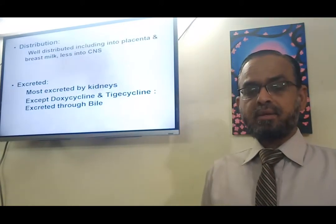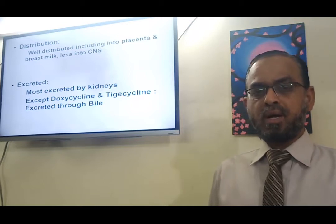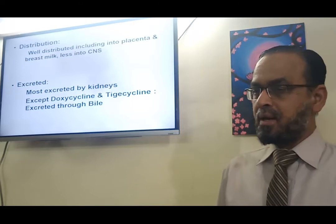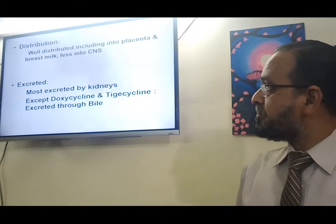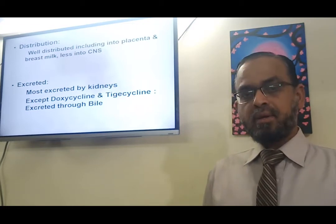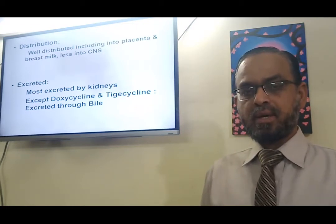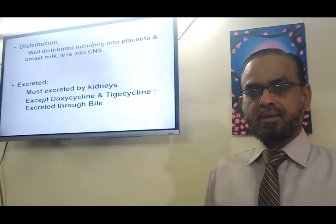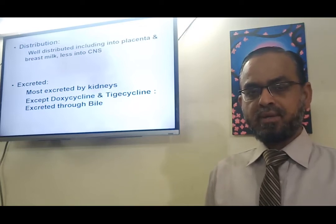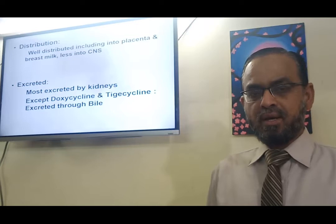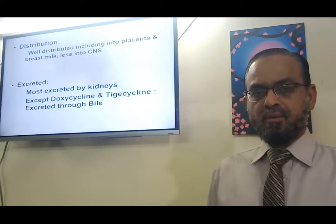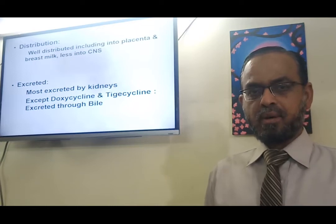Regarding distribution, tetracyclines are well distributed into tissues including the breast and placenta, but less so into the CNS. They are secreted through the kidneys, so caution is required in chronic renal disease, except for doxycycline and tigecycline, which are excreted through the bile.